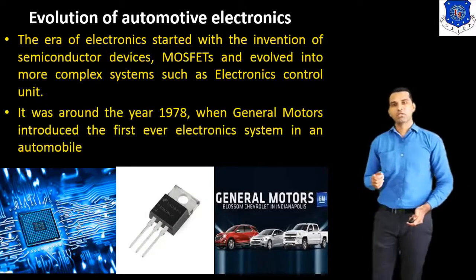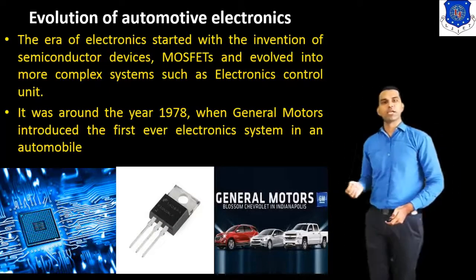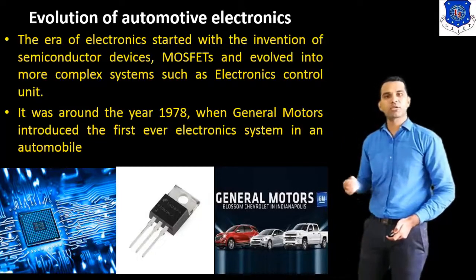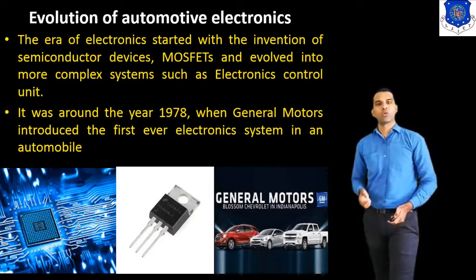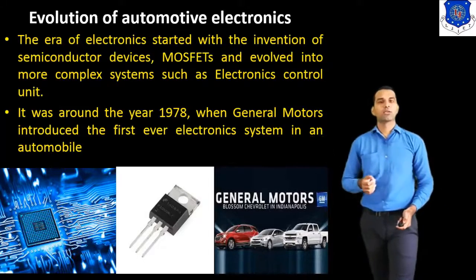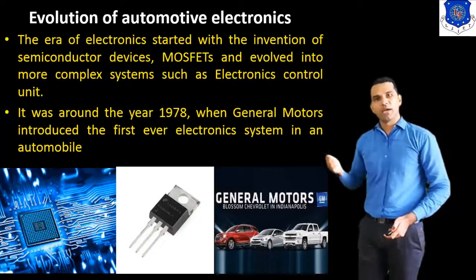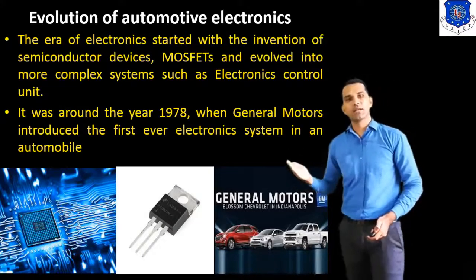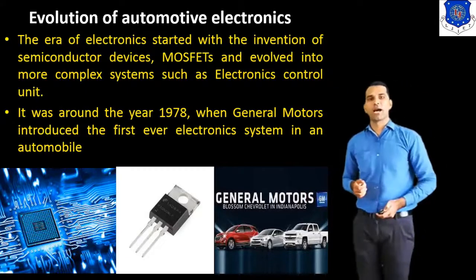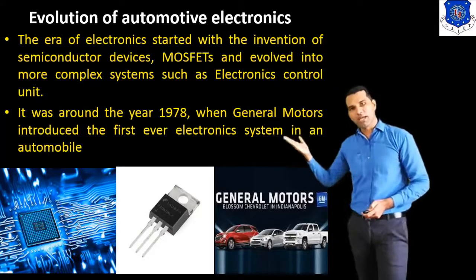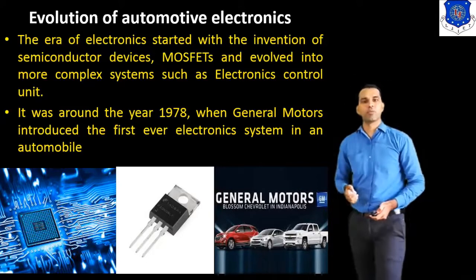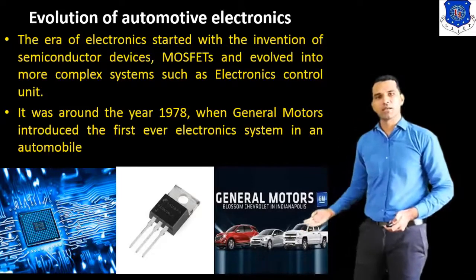It was around the year 1978 when General Motors introduced the first ever electronic system in an automobile. General Motors is the one company that introduced the electronic system in the car. Before that, just mechanical systems were used inside the car. But in 1978, General Motors introduced the electronic system for the first time in the car.